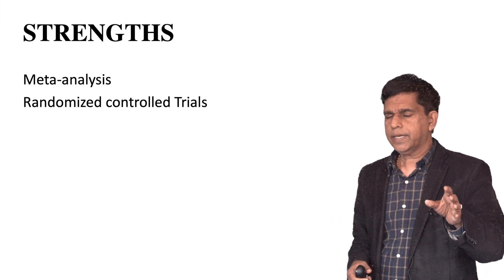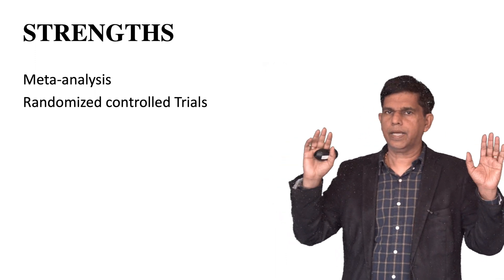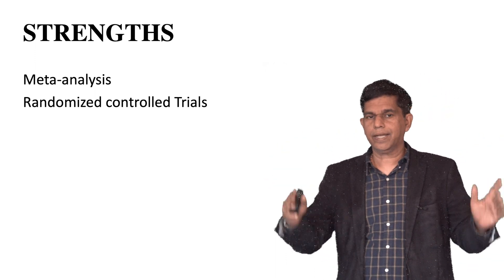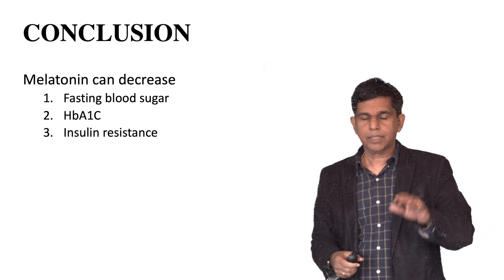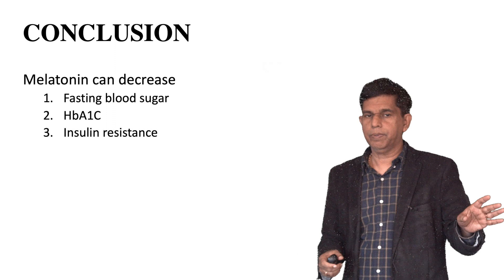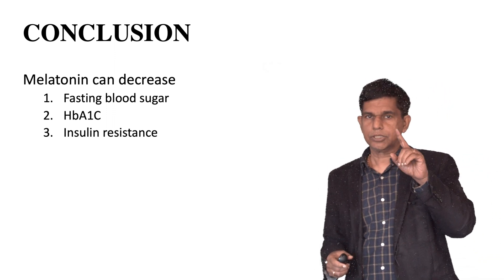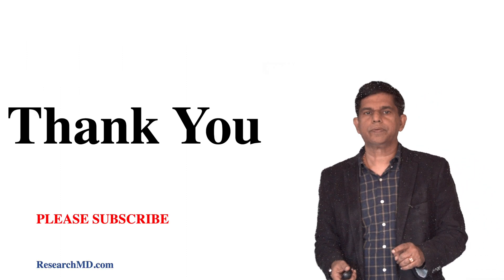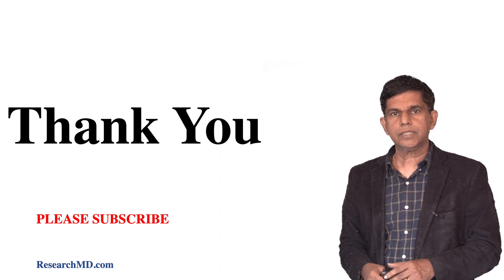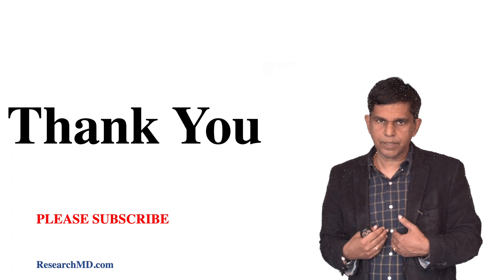Looking at the strength of the study: a meta-analysis provides a very good scientific basis, and the inclusion of randomized controlled studies adds further strength. In conclusion, based on this meta-analysis, melatonin can decrease fasting blood sugar, decrease HbA1c, and decrease insulin resistance. Thank you very much — please help our channel by subscribing so we can produce more videos like this.